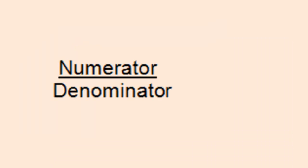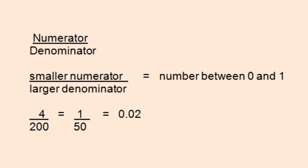Let's first remind ourselves how the value of a fraction can vary depending on the numerator and the denominator. If the numerator is smaller than the denominator, the value of the fraction is between 0 and 1, for example, 4 over 200.